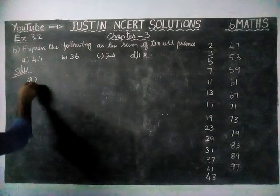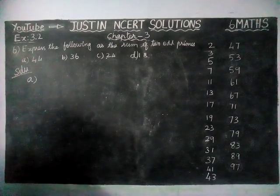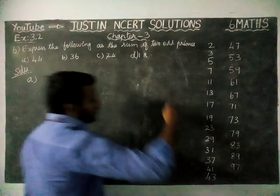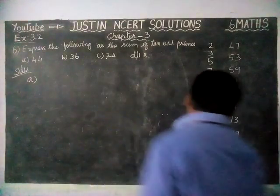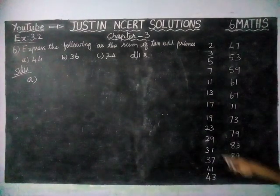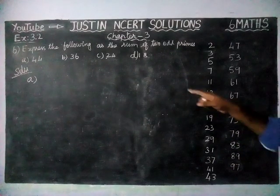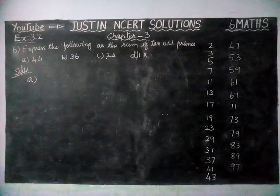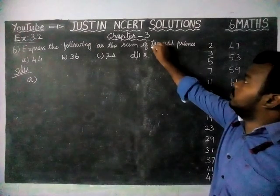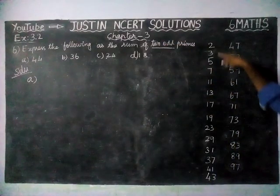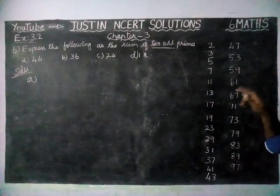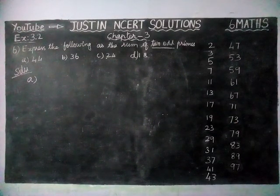Option A: we need 44 as the answer. On the right hand side, I have written all the prime numbers from 1 to 100. We need 44 as the answer — what are the two odd prime numbers we can add to get it? Except 2, everything is an odd number, so we don't have any problem. We just need to add two prime numbers to get 44.